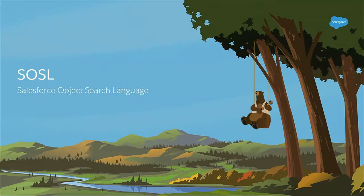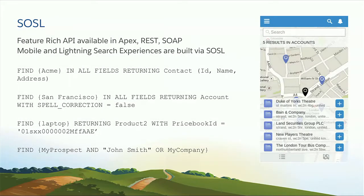The next topic is SOSL — Salesforce Object Search Language. It's really our public API to build your own custom search application. This is a feature-rich API available in Apex, REST, and SOAP. This is the API we use internally at Salesforce to build our mobile application as well as the Lightning search capability. Everything you see in Salesforce in terms of search, you can do the same on top of SOSL — we are truly API-first.